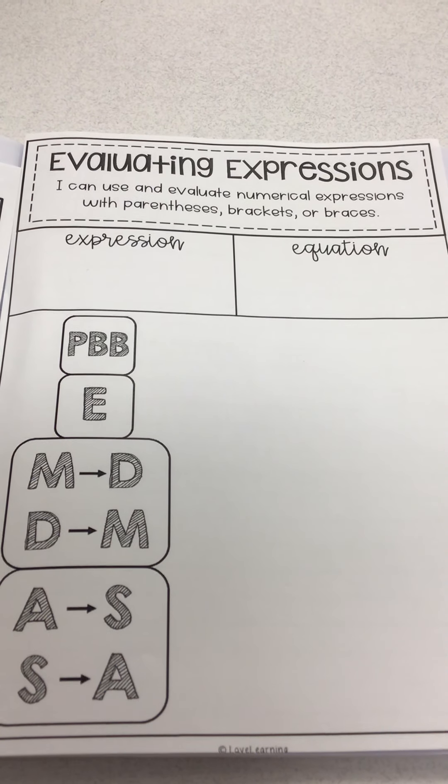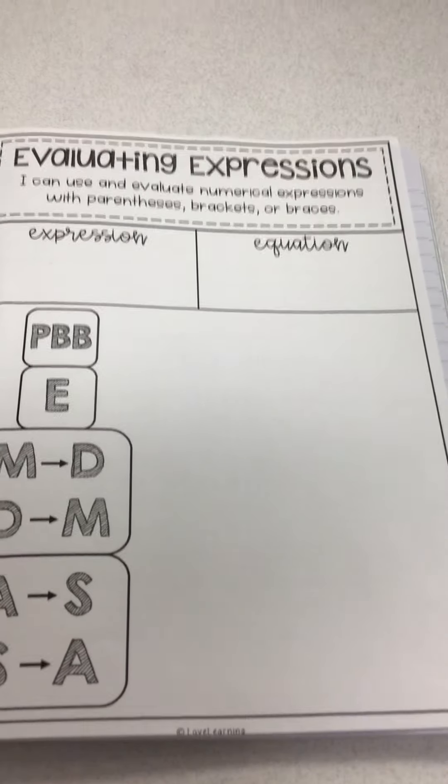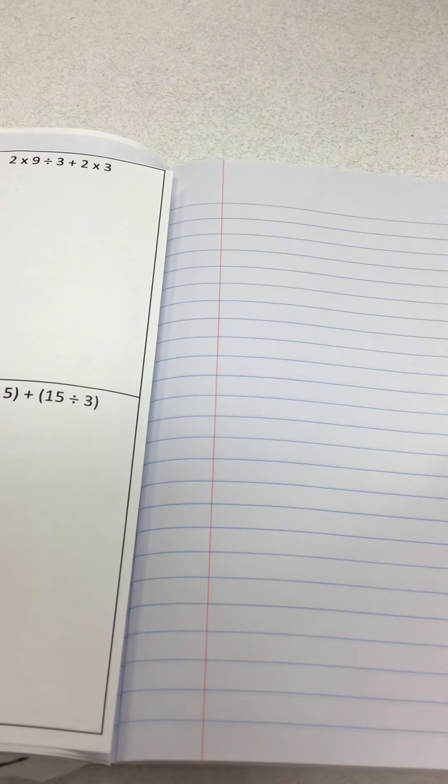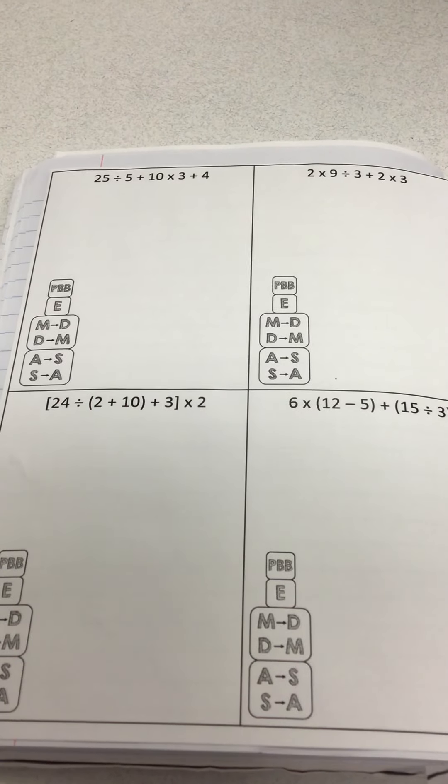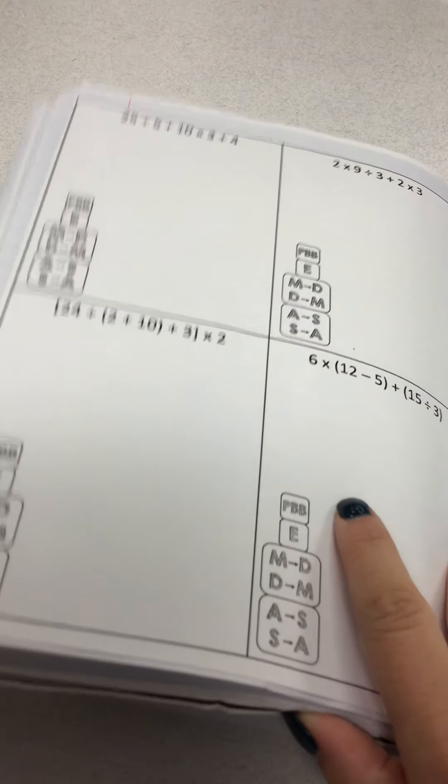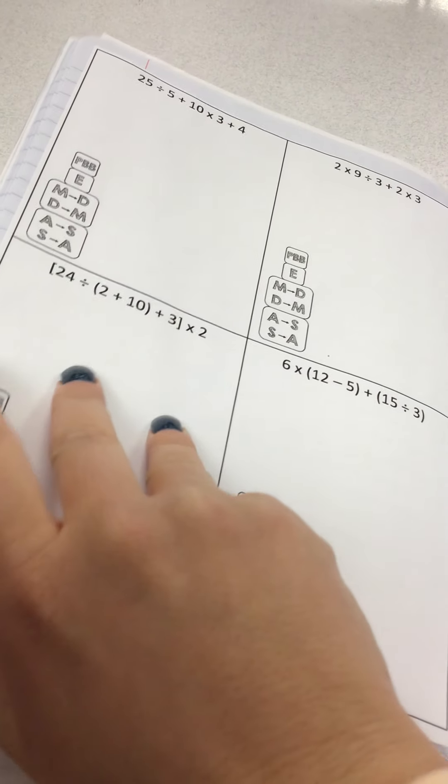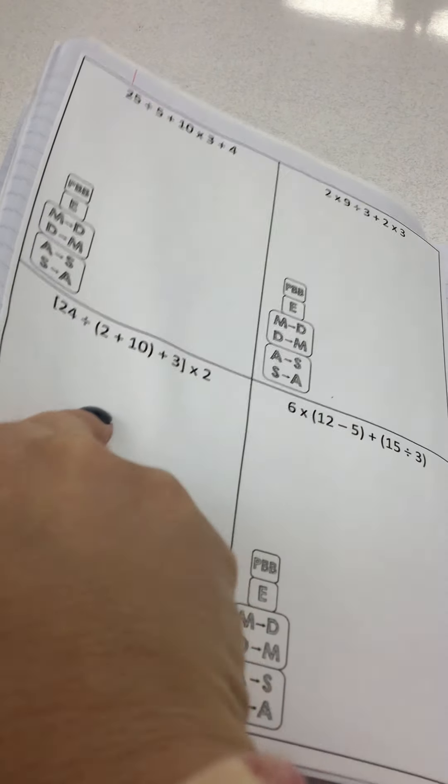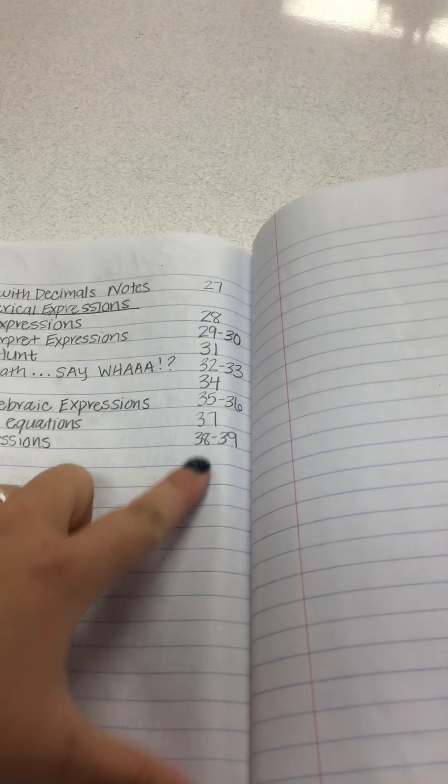Go ahead and glue this page into your notebook and then the one following it with example problems on the next page. And then in your table of contents, I went ahead and titled mine evaluating expressions, and then I just kind of hyphenated it because it's two pages.